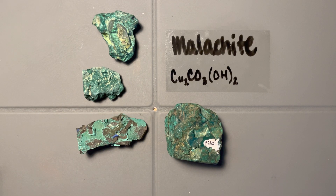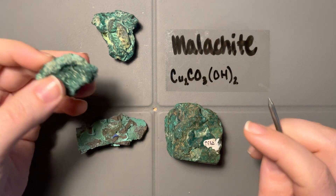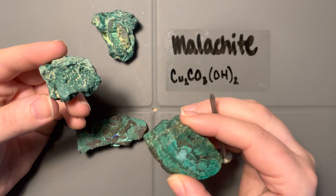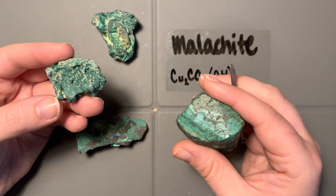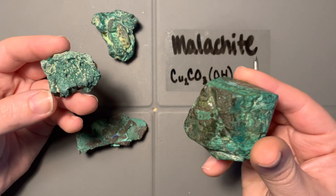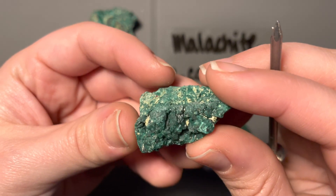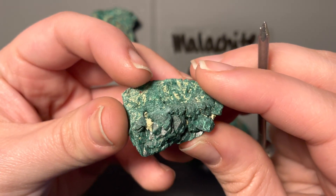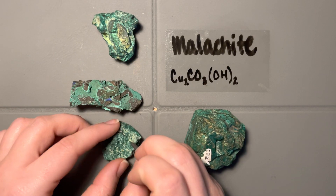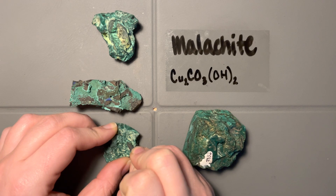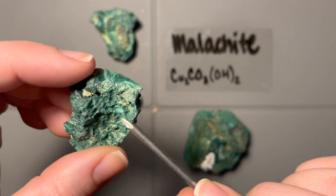The hardness of malachite is 3.5 to 4, so I should be able to scratch it with a nail. We have a couple of different ways the samples are growing — this one is much denser and thicker because we're dealing with a literal rock, whereas this one is more like an actual crystal. I'm going to try to give this a scratch. It's quite easy to powderize.